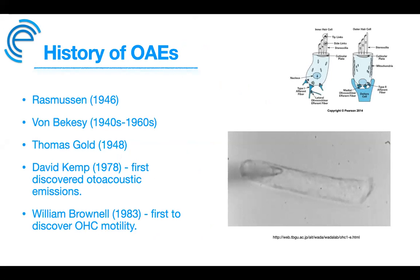This goes back to 1946 when Grant Rasmussen was the first to describe the olivocochlear afferent system, having two major pathways: the lateral and the medial, based on relative sites of origin within the brainstem. The lateral olivocochlear pathways are composed mainly of unmyelinated fibers that originate in the lateral nuclei of the superior olivary complex and terminate synaptically on the inner hair cells.